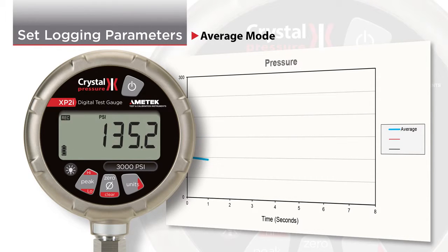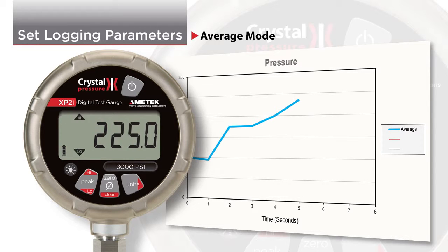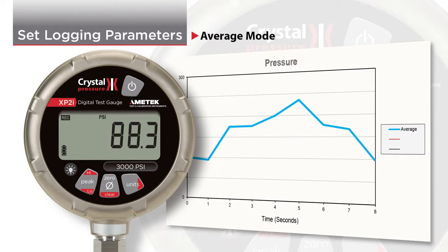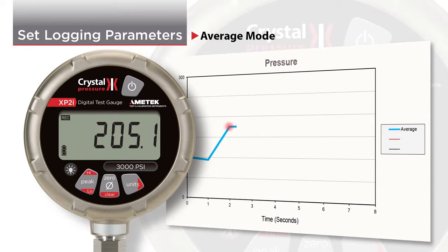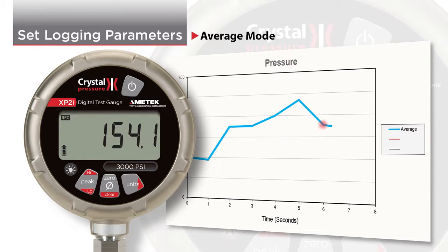Average mode works as follows: Data Logger XP will record data at the logging interval you've selected. The XP2i updates at 4 readings per second, so average mode will record the average of all the readings taken between logging intervals.